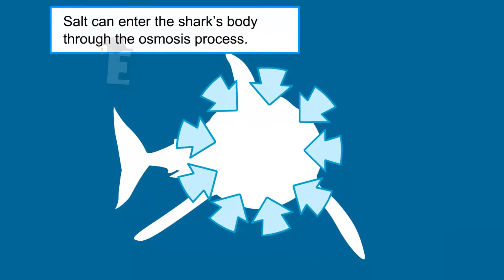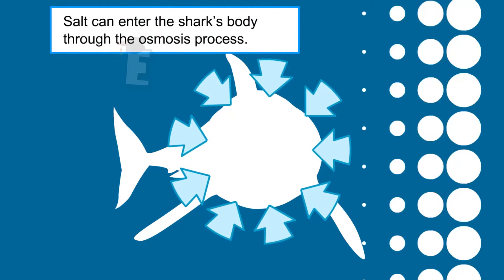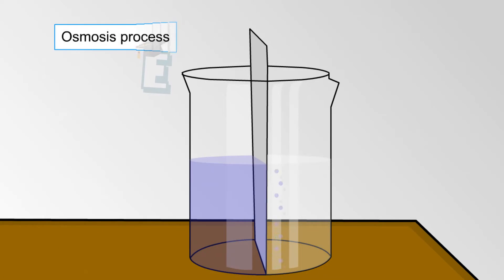The salt can enter the shark's body by the osmosis process. Osmosis is a process of water movement through a semi-permeable membrane, from a lower concentrated solution to the higher concentrated solution.